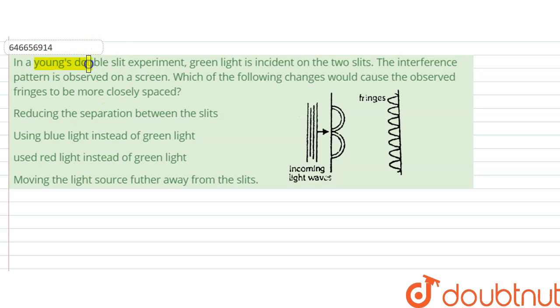The question says: In a Young's double slit experiment, green light is incident on two slits. The interference pattern is observed on a screen. Which of the following changes will cause the observed fringes to be more closely spaced?